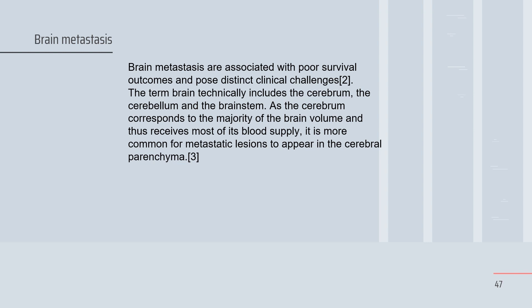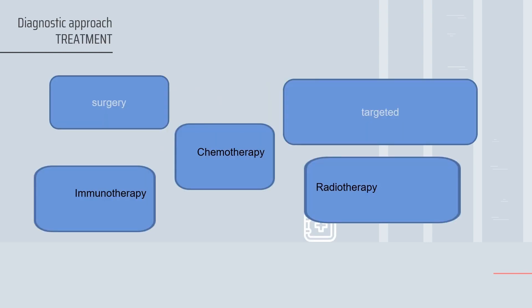Brain metastases usually occur in the cerebral supratentorial region. The diagnostic approach involves history, physical examination, and imaging — including contrast-enhanced MRI and CT — as well as stereotactic biopsy.